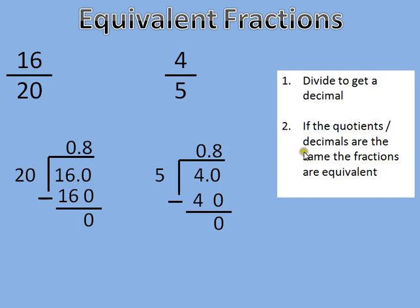Now, if the quotients or the decimals - remember, a quotient is the answer to a division problem - in this case, since the numerator is less than the denominator, they're going to be in decimal form that's less than 1. It's 0.8, 8 tenths.